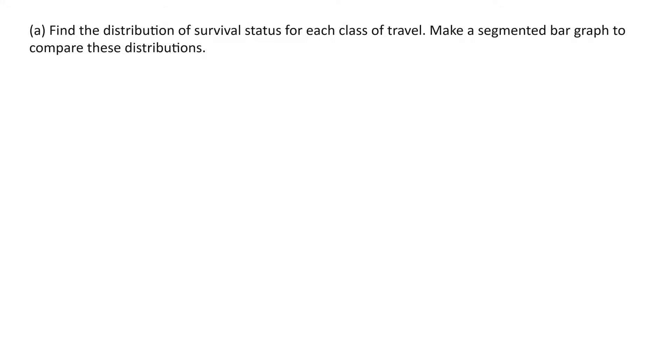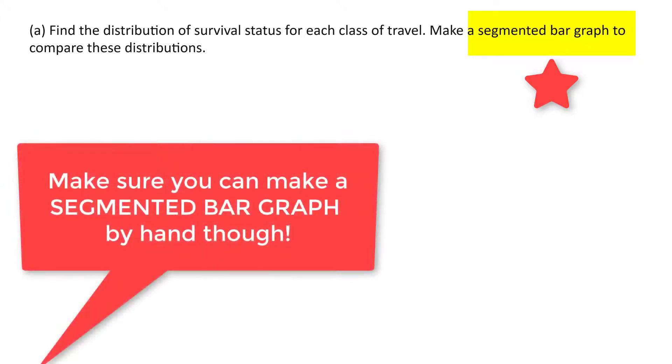For part A, we want to find the distribution of survival status for each class of travel. Then we're going to make a segmented bar graph to compare these distributions. The segmented bar graph may become your preferred way to compare two categorical variables. It's pretty quick to make once you do some of the side work coming up with the distributions, and the mosaic plot you won't be asked to make by hand. Those would be more likely to be given to you, either multiple choice or maybe a free response, and then they can ask you questions about it. But do make sure that you're confident on making a segmented bar graph by hand. Let's find the distributions.